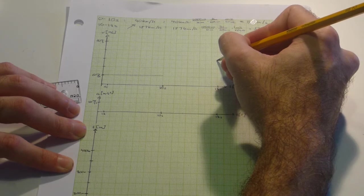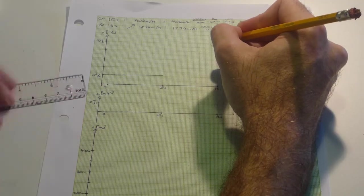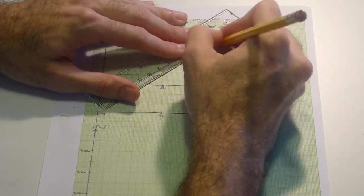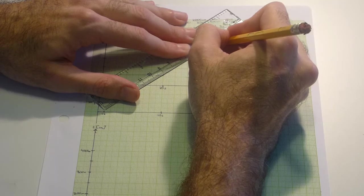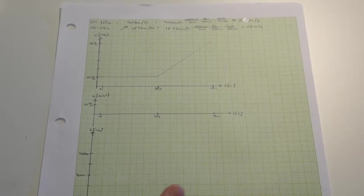10, 20, 30, 40, 50, 52 up here. That is our VT graph.